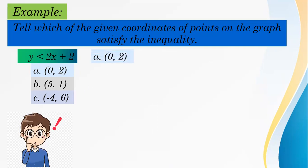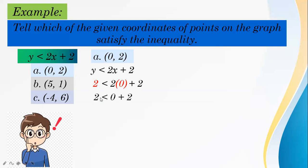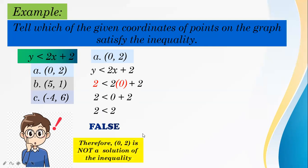For letter A, the point is (0, 2). Substituting into y less than 2x plus 2: y is 2 and x is 0, so we get 2 less than 2 times 0 plus 2, which gives 2 less than 2. The statement is false because 2 is not less than 2 — 2 is equal to 2. Therefore, (0, 2) is not a solution of the inequality.